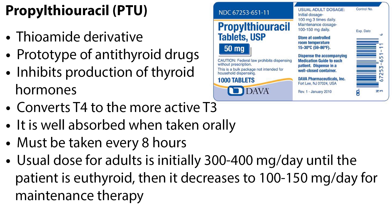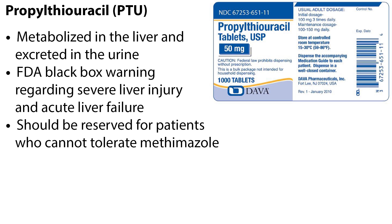Propylthiouracil or PTU is a thioamide derivative and the prototype of antithyroid drugs. It works by inhibiting production of thyroid hormones and converting T4 to the more active T3. It is well absorbed when taken orally, but the duration of action is rather short, so it must be taken every 8 hours. The usual dose for adults is initially 300-400 mg per day until the patient is euthyroid, then it decreases to 100-150 mg per day for maintenance therapy. PTU is metabolized in the liver and excreted in the urine. It carries an FDA black box warning regarding severe liver injury and acute liver failure.